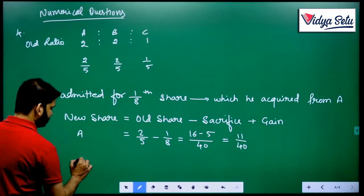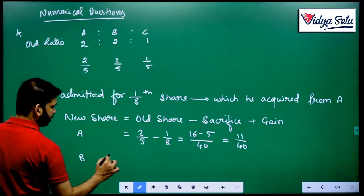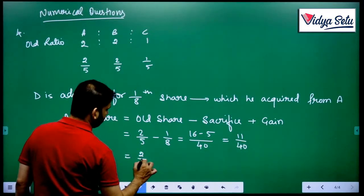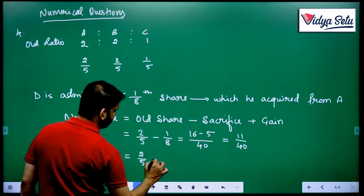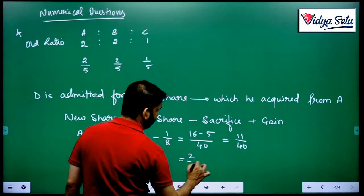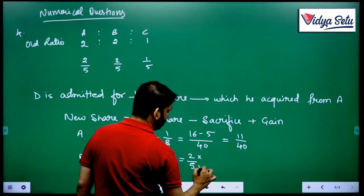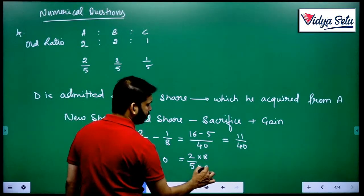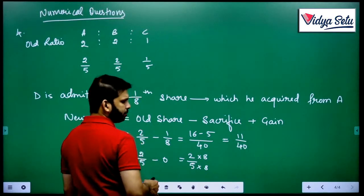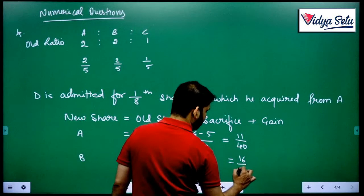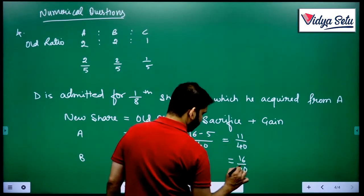In the case of B, he is not sacrificing anything. So 2/5 minus 0 is still 2/5. To make it over 40, we multiply the numerator and denominator by the same amount, so it comes to 16/40.